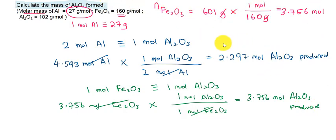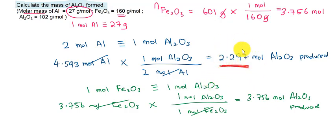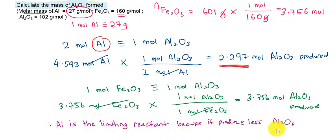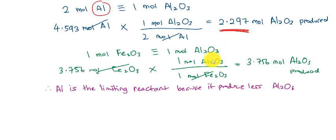After obtaining the moles of aluminium oxide produced by using both reactants, we compare which one produces less product. Looking at 3.756 and 2.297 — obviously 2.297 is the lesser amount of aluminium oxide produced. So automatically, aluminium is the limiting reactant. We write: aluminium is the limiting reactant because it produces less aluminium oxide. The number of moles of aluminium oxide produced is therefore 2.297 moles.